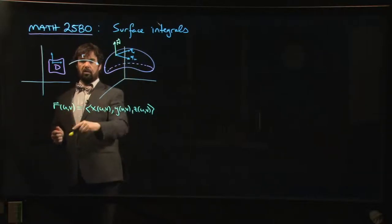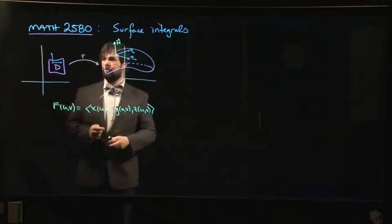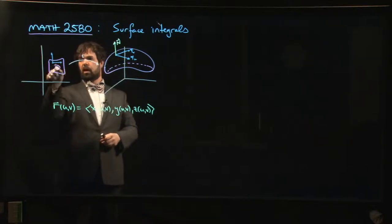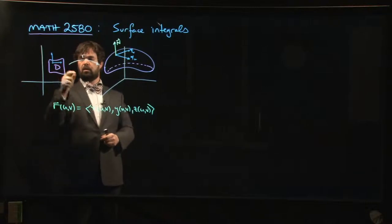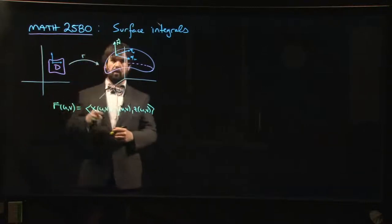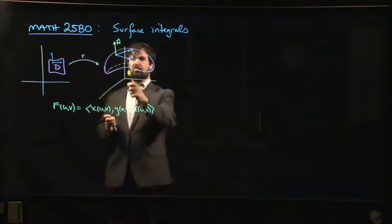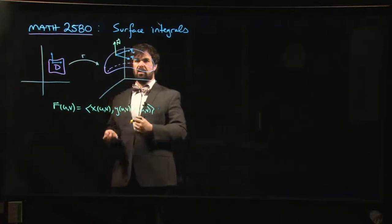Because you can look at curves of constant u or constant v. So in particular, the usual kind of i, j vectors pointing either to the right or pointing up in the plane, they generate these tangent vectors, Tu and Tv.